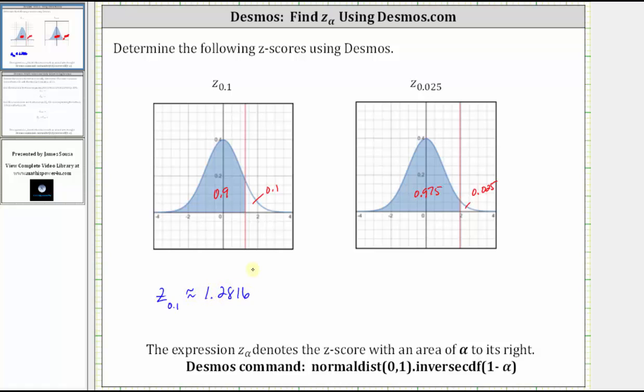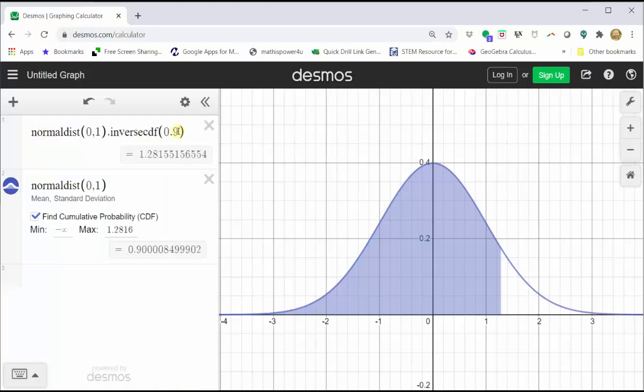Now let's find the Z-score Z sub 0.025. Notice how the area to the left is 0.975. Going back to Desmos, we go back up to cell one and just change the 0.9 to 0.975. The Z-score shows below, which to four decimal places would be 1.9600.